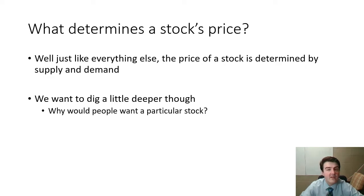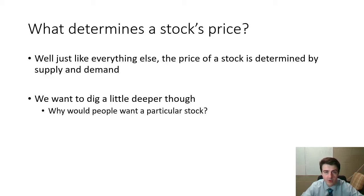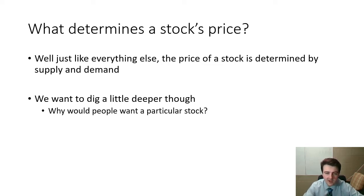First point: just like everything in the economy, supply and demand are going to determine a stock's price, with the usual typical fluctuations in supply and demand — and especially on the demand side, typical shifts and everything that we've seen before. But let's dig a little deeper. What kind of things are people looking for? Why would people want a particular stock?